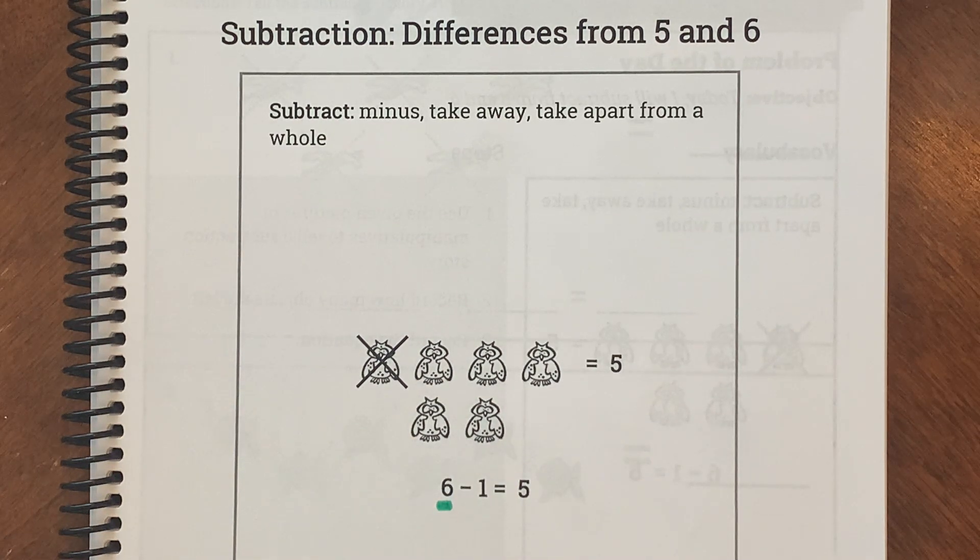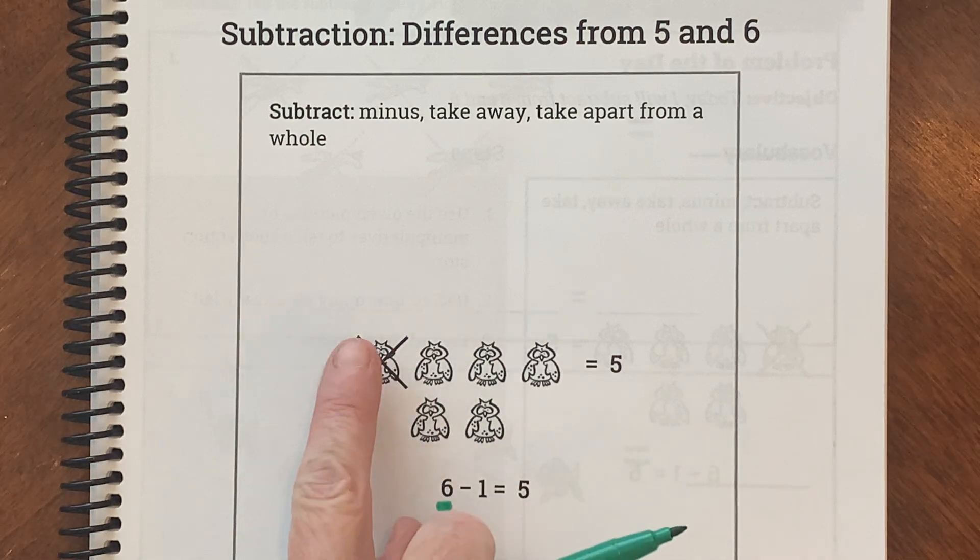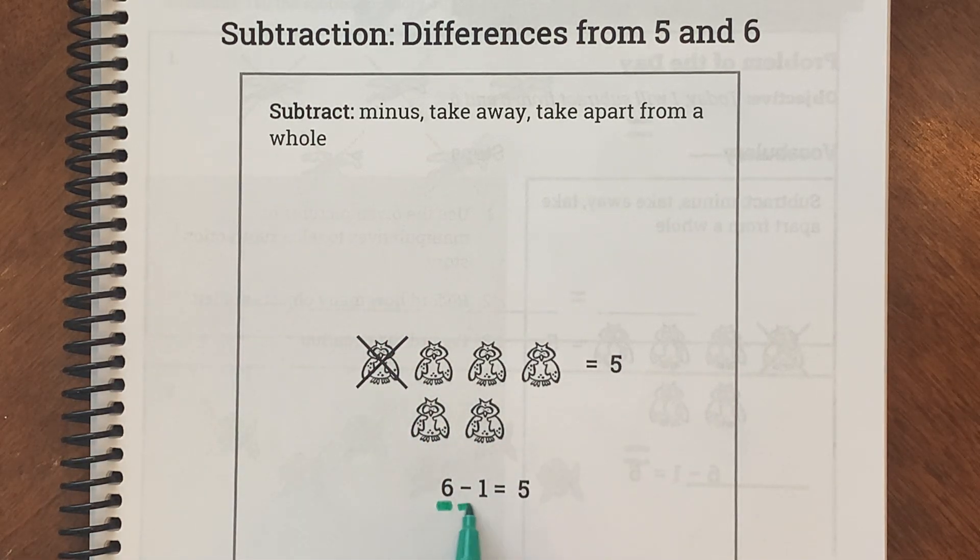And then how many owls are they taking away? The X says they're taking away just one, just this one. So take away 1 owl.